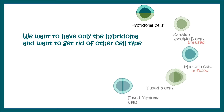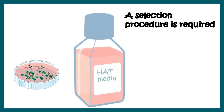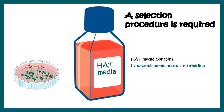A selection procedure is required, and that is done using HAT media. HAT media contains hypoxanthine, aminopterin, and thymidine. Before understanding how HAT media and the selection procedure work, we need to understand a very basic concept: when any cell divides, it needs to replicate its DNA, and DNA replication requires a lot of nucleotides. So nucleotide biosynthesis is crucial for cells to divide.